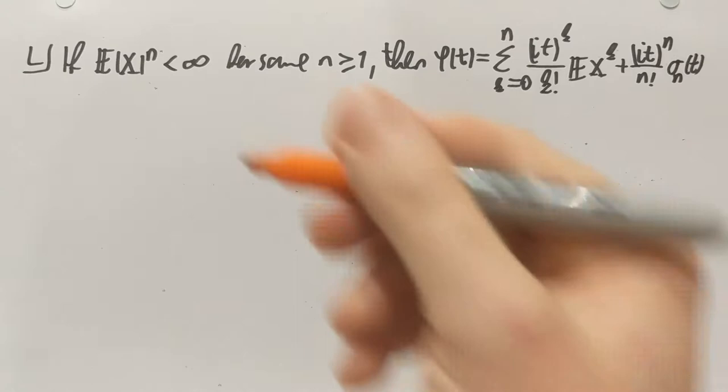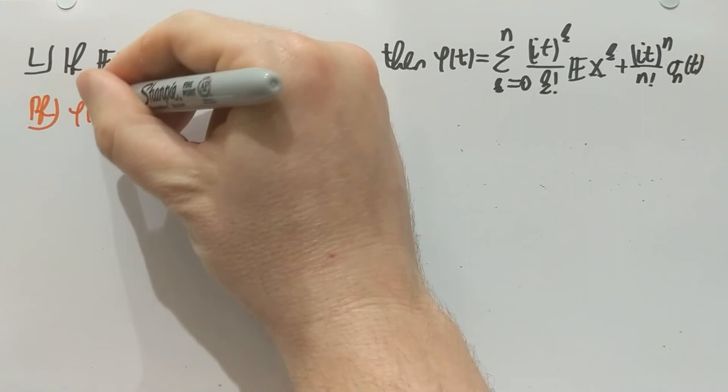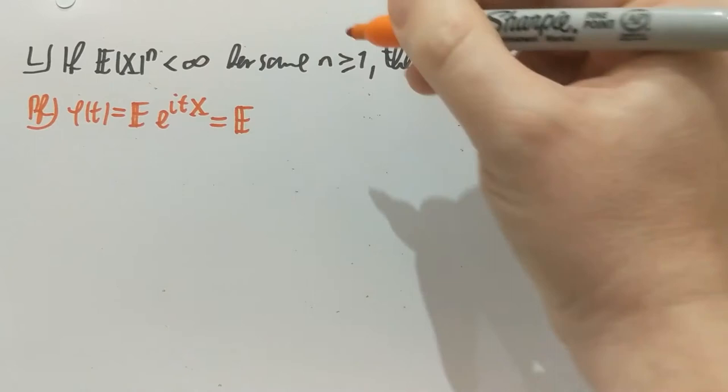And let's prove this. So it's just a clever Taylor expansion of phi. So what is phi? Phi is the expectation of e to the itx. And there is, I'm going to borrow a Taylor expansion in the complex numbers of e to the itx. And that goes as follows.